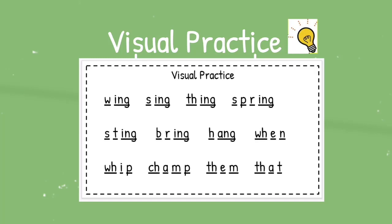With this practice, we want to start out where we are breaking the words into parts, and then we'll read them all together. W-ing, wing. S-ing, sing. Th-ing, thing. S-p-r-ing, spring. S-t-ing, sting. B-r-ing, bring. H-ang, hang. Wh-en, when. Wh-ip, whip. Ch-am-p, champ. Th-em, them. Th-at, that. All right, very good, friends.